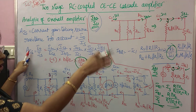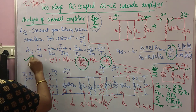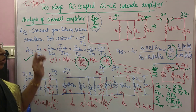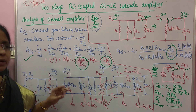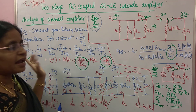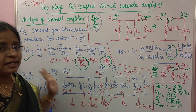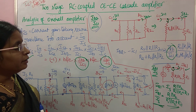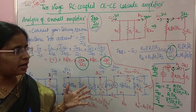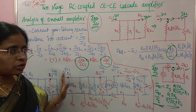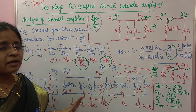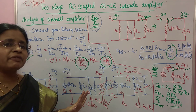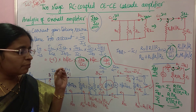So these are all the overall parameters of the two-stage amplifier: voltage gain AV, current gain AI, input impedance, output impedance, AVS, and AIS. The analysis of the two-stage RC coupled amplifier is now complete. Even for next amplifiers I will follow the same procedure, and after that the analysis of two-stage amplifiers will become very easy.